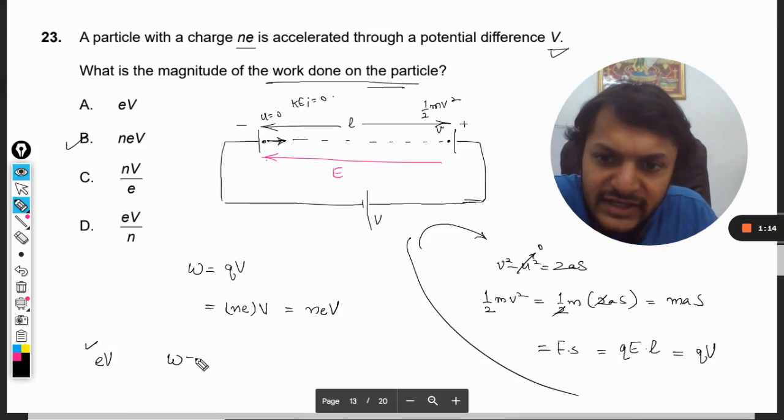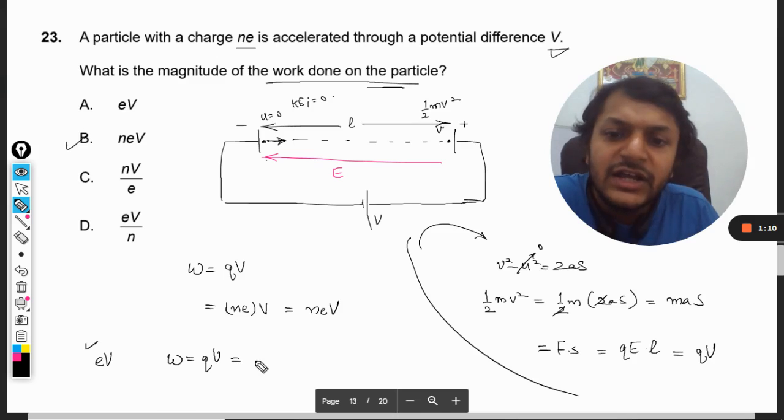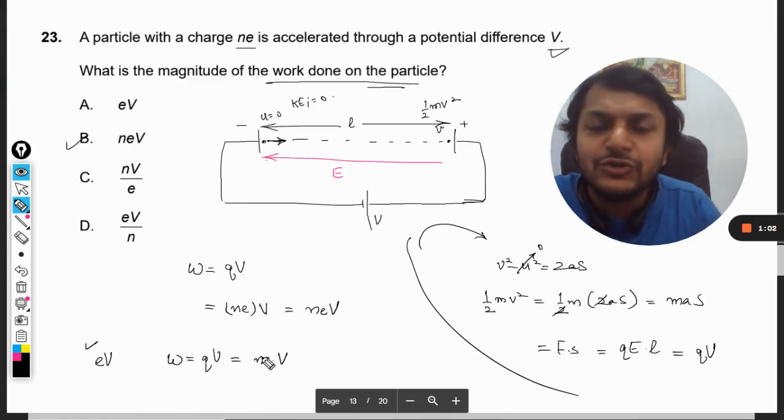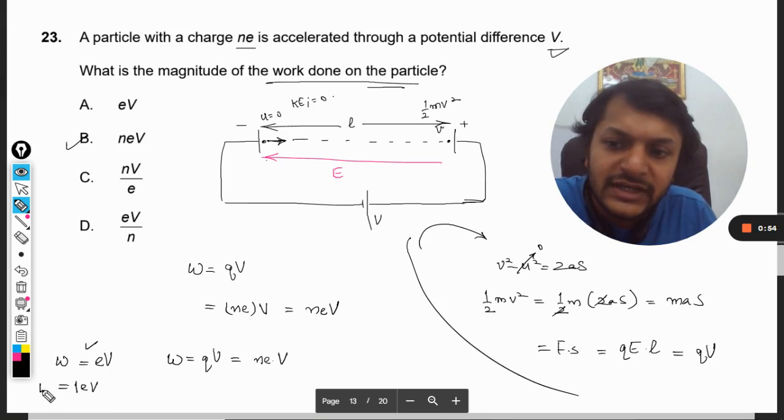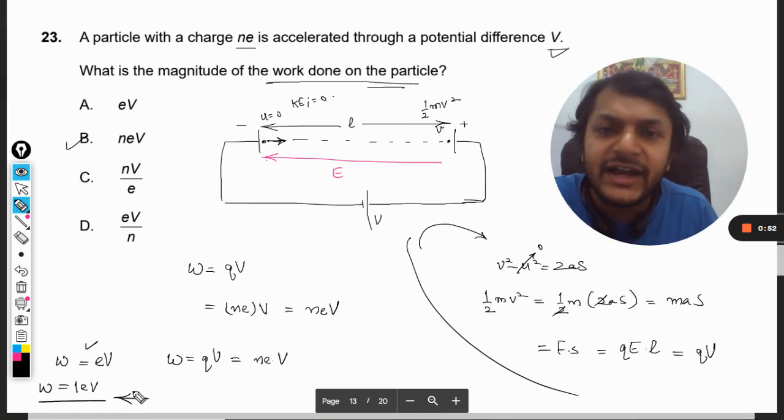The work done equals q into V, straightforward. The charge is ne and the potential difference is V. We could have reached the same conclusion using the direct formulation that work done equals eV. One electron volt is defined as the work done in accelerating one electron by the potential difference of one volt.